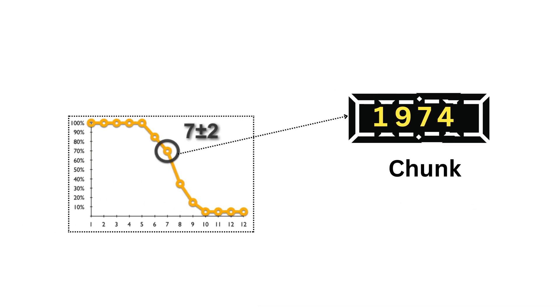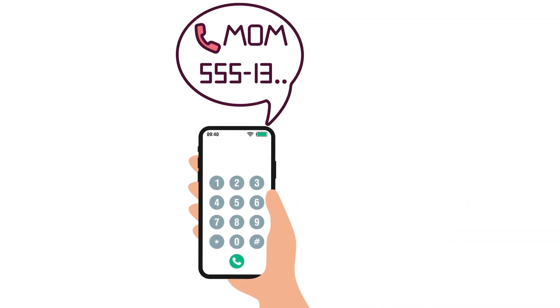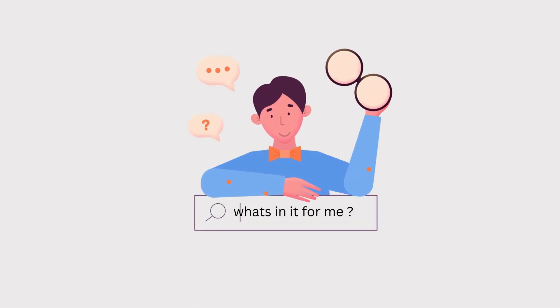But here's the thing. STM isn't just limited in capacity. It's also fleeting. Without rehearsal, the information in your STM fades away in about 20 to 30 seconds. That's why you often forget a phone number unless you repeat it to yourself a few times.